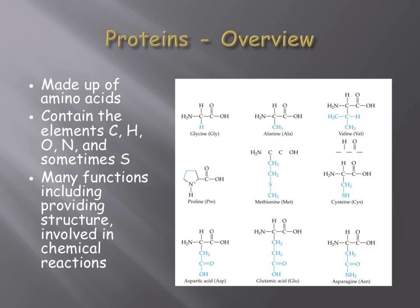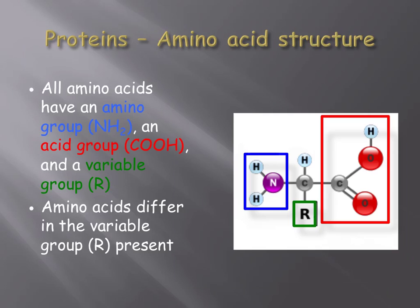The second of the four types of biomolecules that will be discussed are proteins. There are over tens of thousands of proteins that humans can produce, carrying out a tremendously diverse number of jobs, ranging from providing structure to cells to speeding up chemical reactions. Proteins are made up of as few as 20 to up to hundreds of monomers, or building blocks, called amino acids. All proteins are made up of the elements carbon, hydrogen, oxygen, and nitrogen. Some amino acids contain the element sulfur, and some proteins can be associated with other different elements.